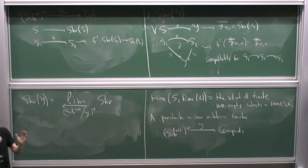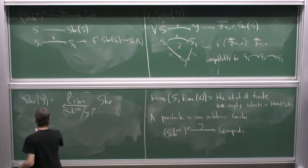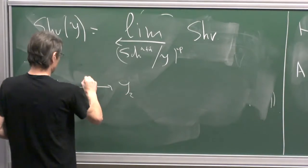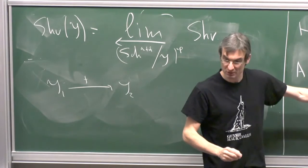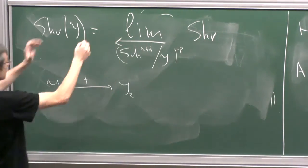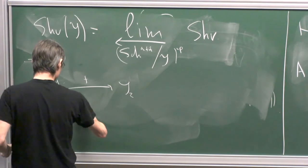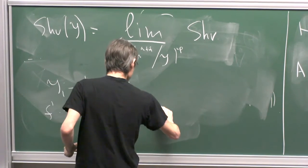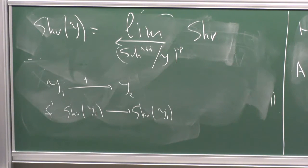The integral functor applied to B turns out to equal the cohomology with compact supports over the Ran space of this factorization sheaf of B. So, rather than defining the integral abstractly, you construct the Ran space, form the factorization sheaf from B, and then take its compact support cohomology. Lurie's higher algebra is the machinery that makes all of this precise.